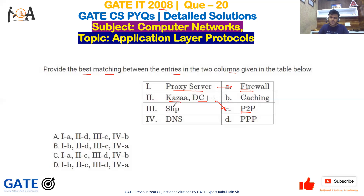The third one is SLIP, which stands for Serial Line Protocol, and PPP, which is Point-to-Point Protocol. These are serial line protocols that generally operate at the data link layer, and SLIP best matches with PPP.